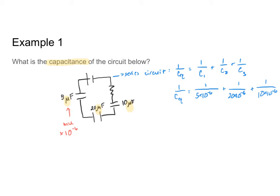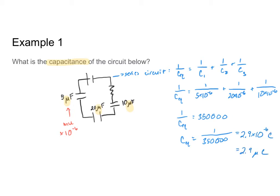When I put all that into a calculator, I get that 1 over CEQ is equal to 350,000. Thus the equivalent capacitance of my circuit is equal to 1 over 350,000, or approximately 2.9×10⁻⁶ farads, or 2.9 microfarads. And there you have it — I have solved for the equivalent capacitance of this nice, simple series circuit. Of course, it would be much easier if they were in parallel.